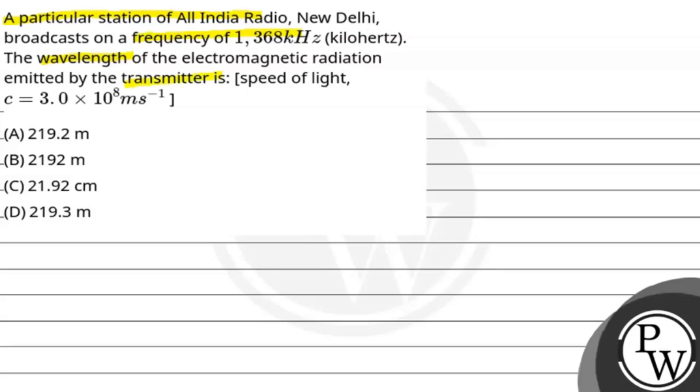Speed of light is given: c = 3 × 10^8 m/s. The options are: (A) 219.2 m, (B) 2192 m, (C) 21.92 cm, and (D) 219.3 m.